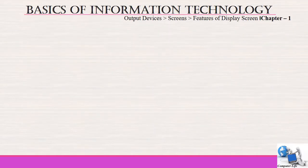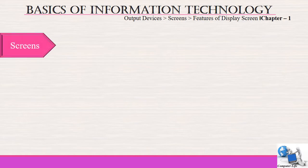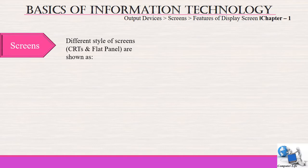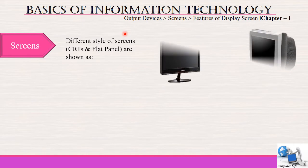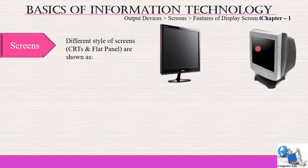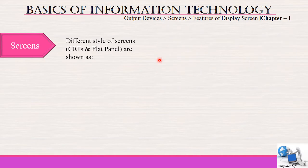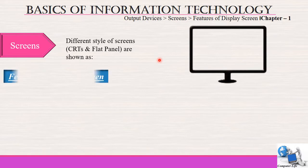Let's discuss all types of output devices one by one. The first one is screens. Different styles of screens like CRT and flat panel are shown. This is the monitor of CRT and this one is the flat panel monitor. Now I am replacing these monitors with a simple screen to discuss different features of display screens.